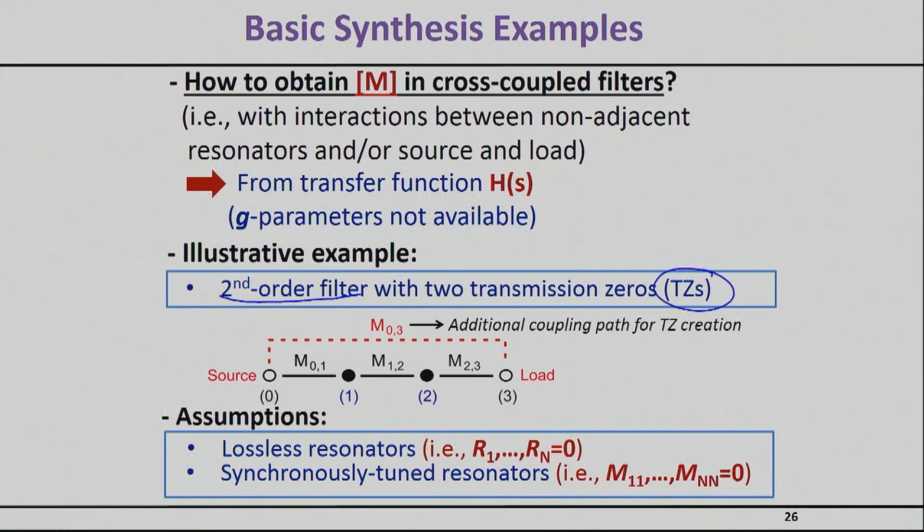The topology of the filter is shown right here so I basically have two resonators shown as one and two. I have of course my direct couplings as I have before, so I have one, two, three direct couplings, and I have introduced with this red color an additional cross coupling, basically creating a path from the source to the load.